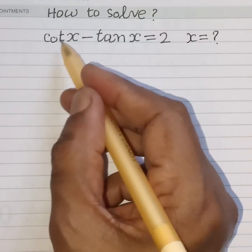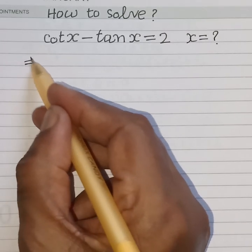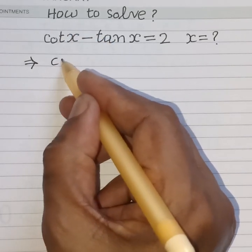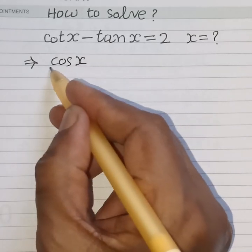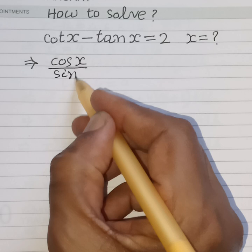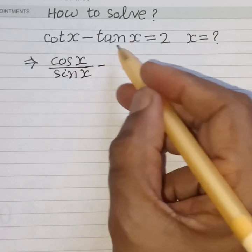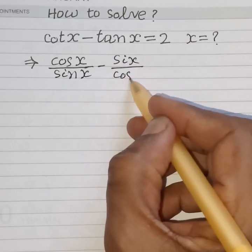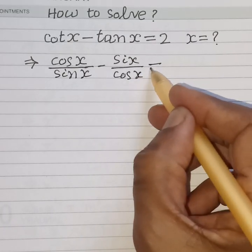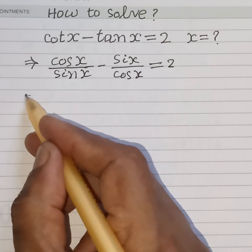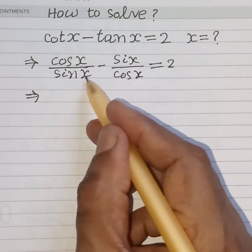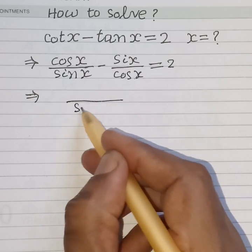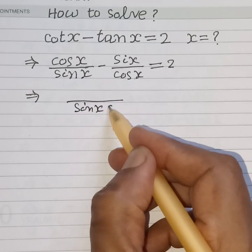Solution: cot x is cos x divided by sin x, minus tan x which is sin x divided by cos x, and the right-hand side is equal to 2. Now simplifying this, the LCM of the two terms sin x and cos x is sin x cos x.